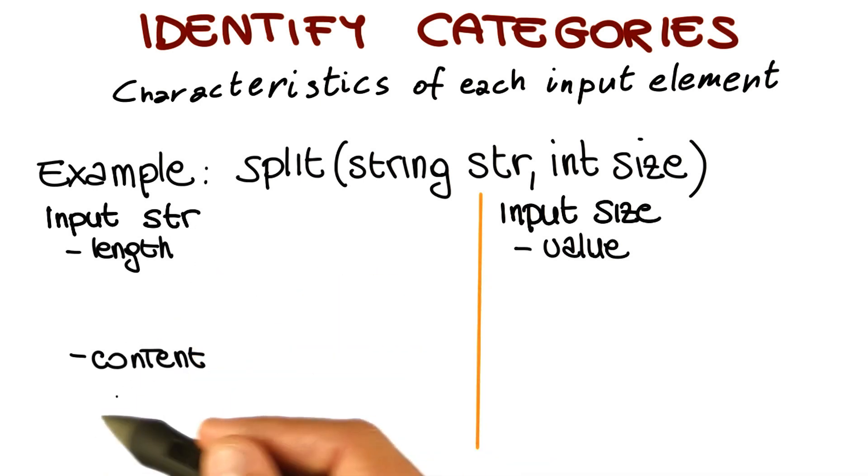At the end of this step, what we have is two categories, two interesting characteristics for the string input str, which are the length and the content, and one category for the integer input size, which is its value.